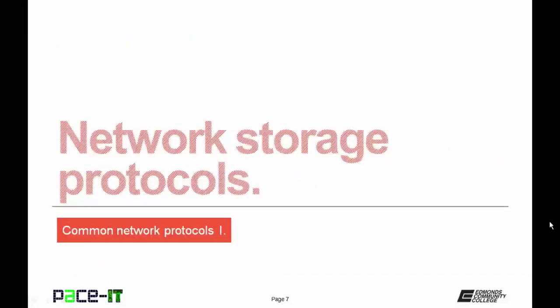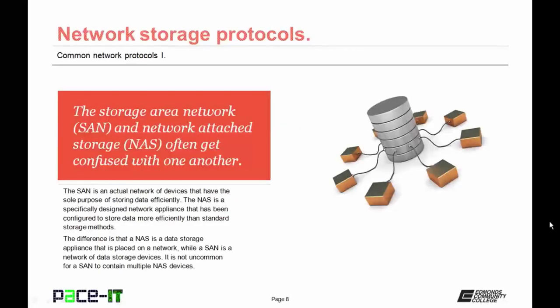Let's move on to network storage protocols. The storage area network, or SAN, and the network-attached storage, or NAS, often get confused with one another, but they are very different. The SAN is an actual network of devices with the sole purpose of storing data efficiently. The NAS is a specifically designed network appliance configured to store data more efficiently than standard storage methods. The difference is that the NAS is a data storage appliance placed on a network, while the SAN is a network of data storage devices. It's not uncommon for a SAN to contain multiple NAS devices.